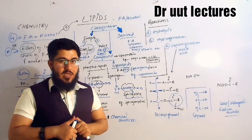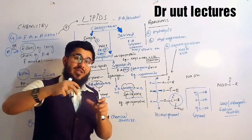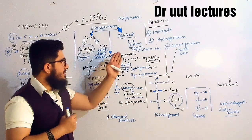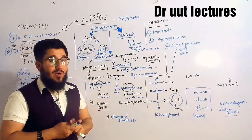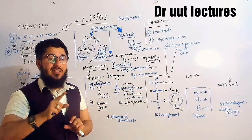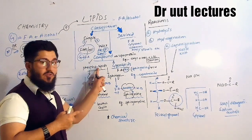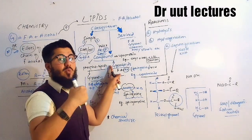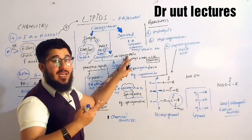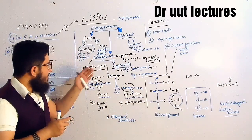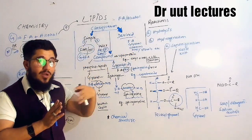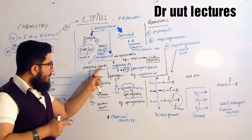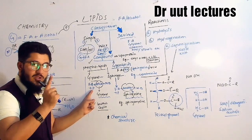Let's move towards the next classification: compound lipids. Compound means a combination of different things. When lipids have some other moieties or additional groups attached to their chemical structure, they are called compound lipids. There are three types: phospholipids, glycolipids, and lipoproteins. Phospholipids are called compound lipids because a phosphate group is attached to the lipid. Glycolipids have a glyco (carbohydrate) attached, and lipoproteins have a protein attached. Phospholipids are further divided into two types based on the alcohol: glycerophospholipid and sphingophospholipid.